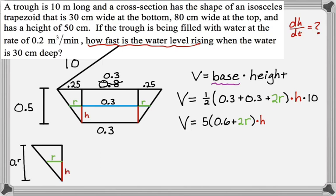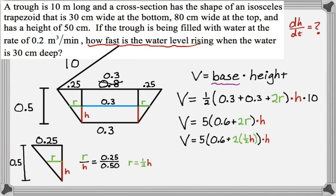So I have this triangle. Blow it up a little bit. So I just pulled that off the overall picture. And from there I can see that R over H is going to be 0.25 over 0.5, which means that R is equal to 1 half of H, which is good because now I can go back to my volume formula and substitute that in.